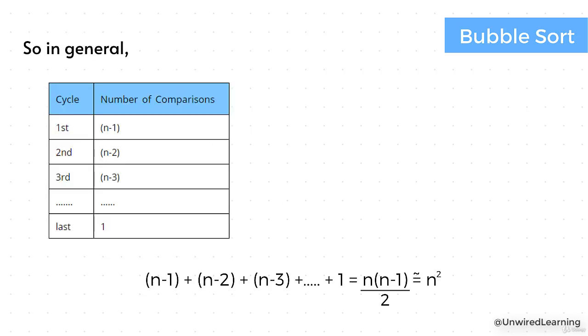So if you generalize this pattern, it was n minus 1, then n minus 2, then n minus 3, and then keep on following. So it's actually a mathematical series which turns out to be n into (n minus 1) by 2. Now if you generalize this one, it will be n square by 2 minus n by 2. If you remember our previous concept, we remove the constant and keep the biggest term, which is n square.